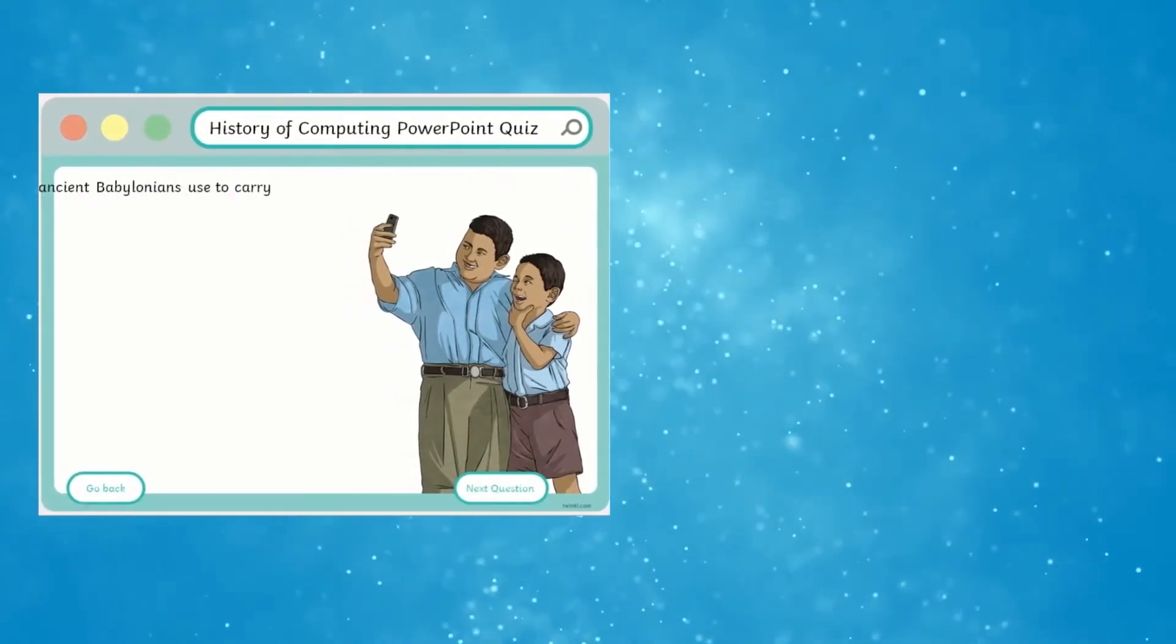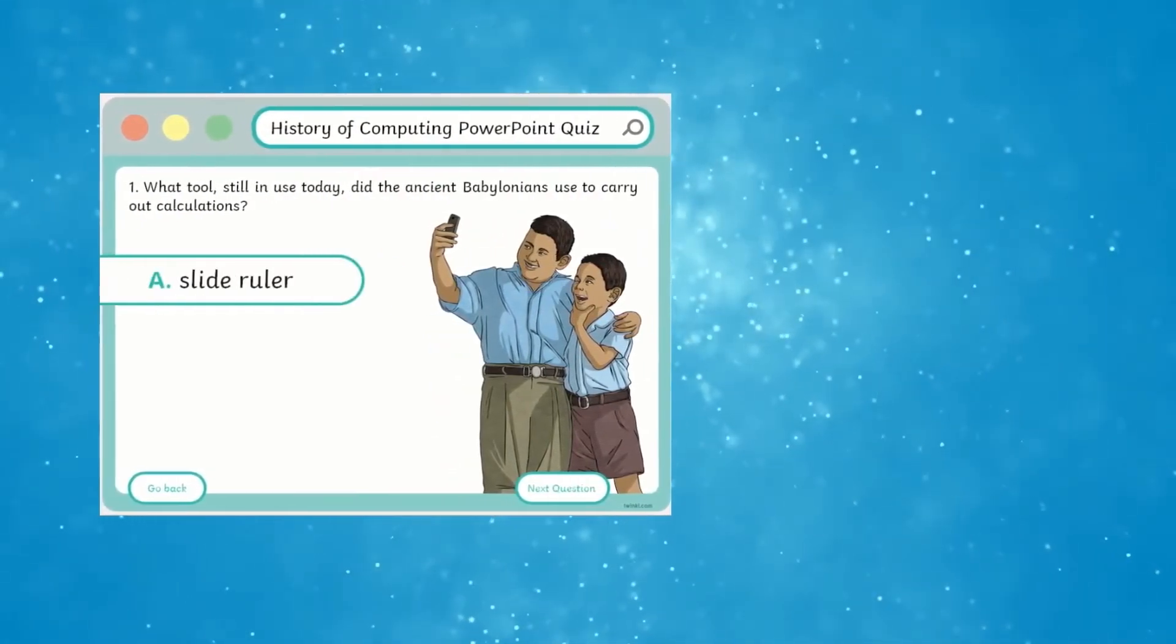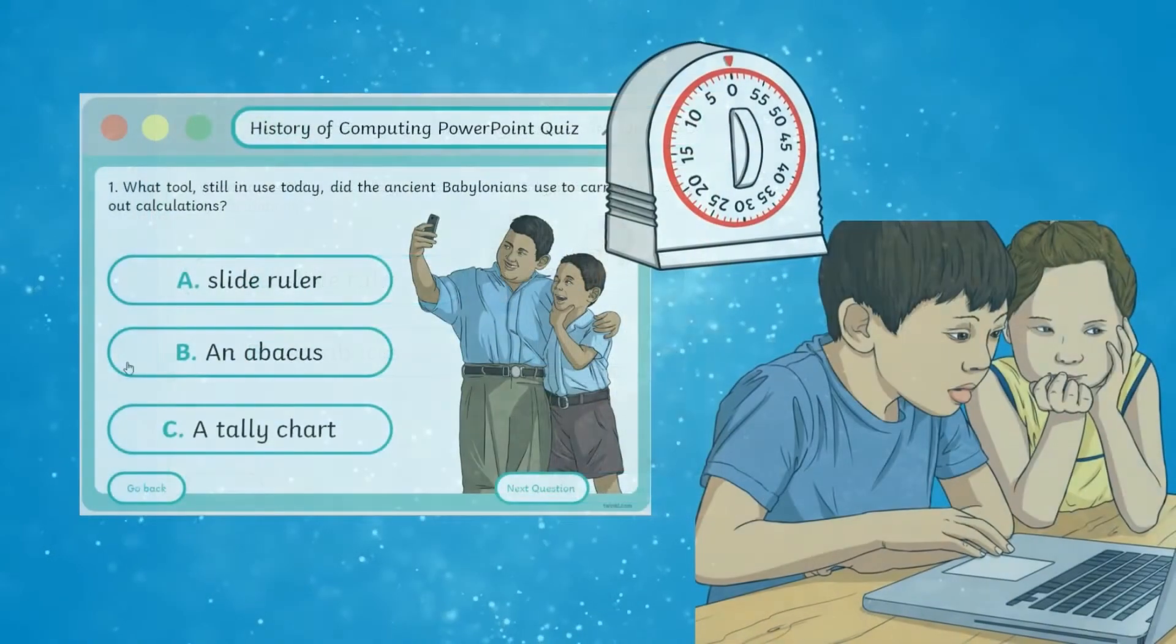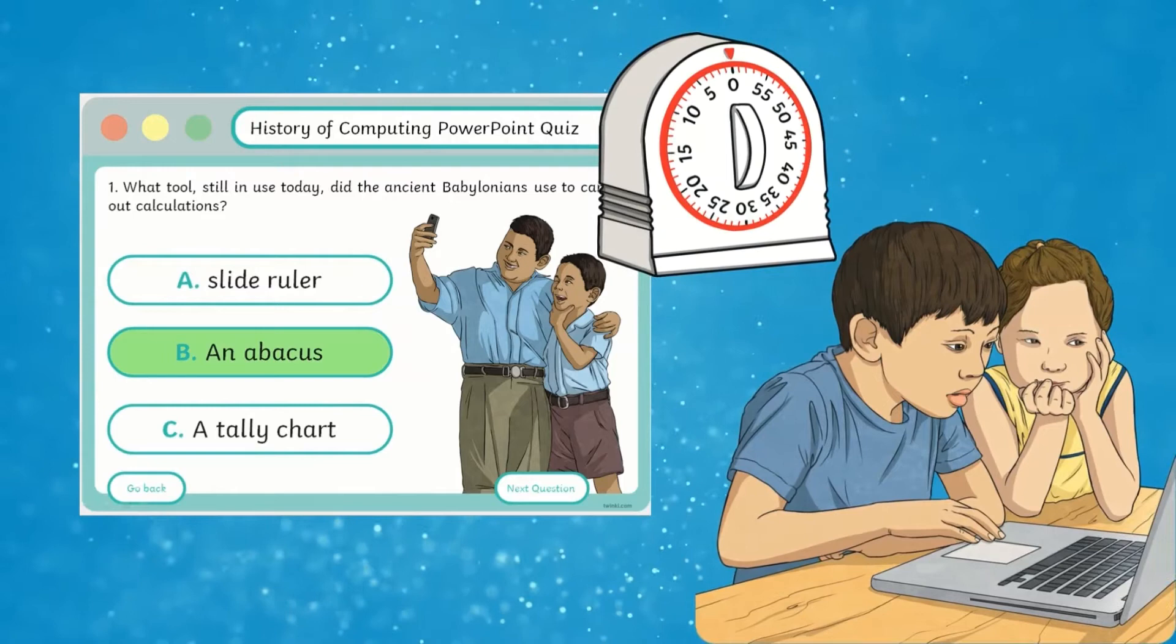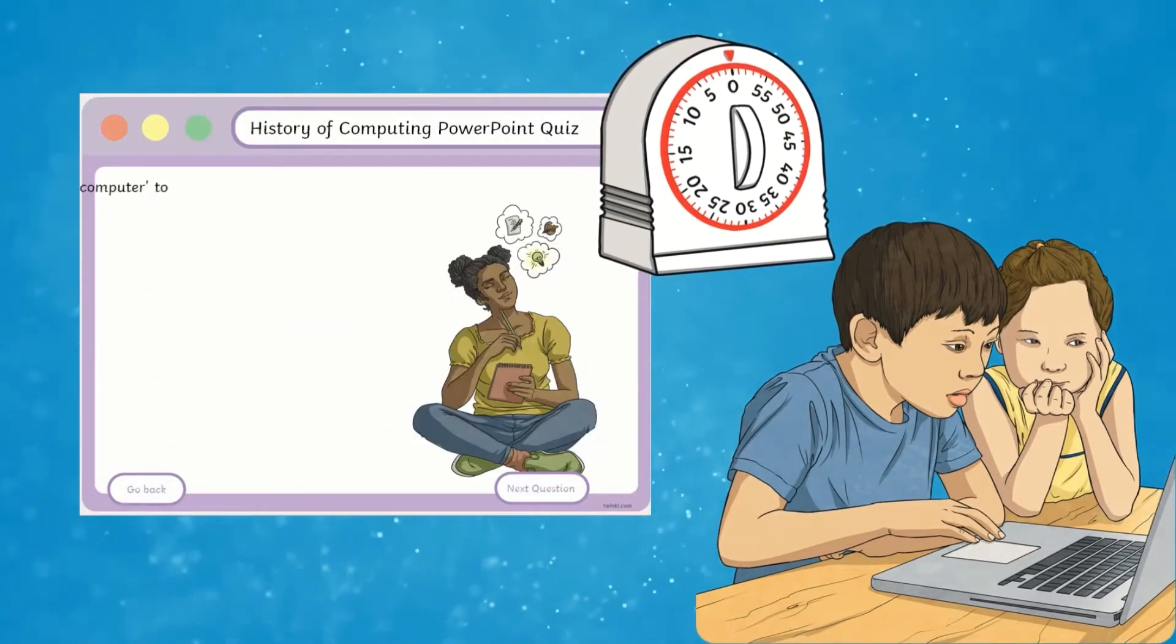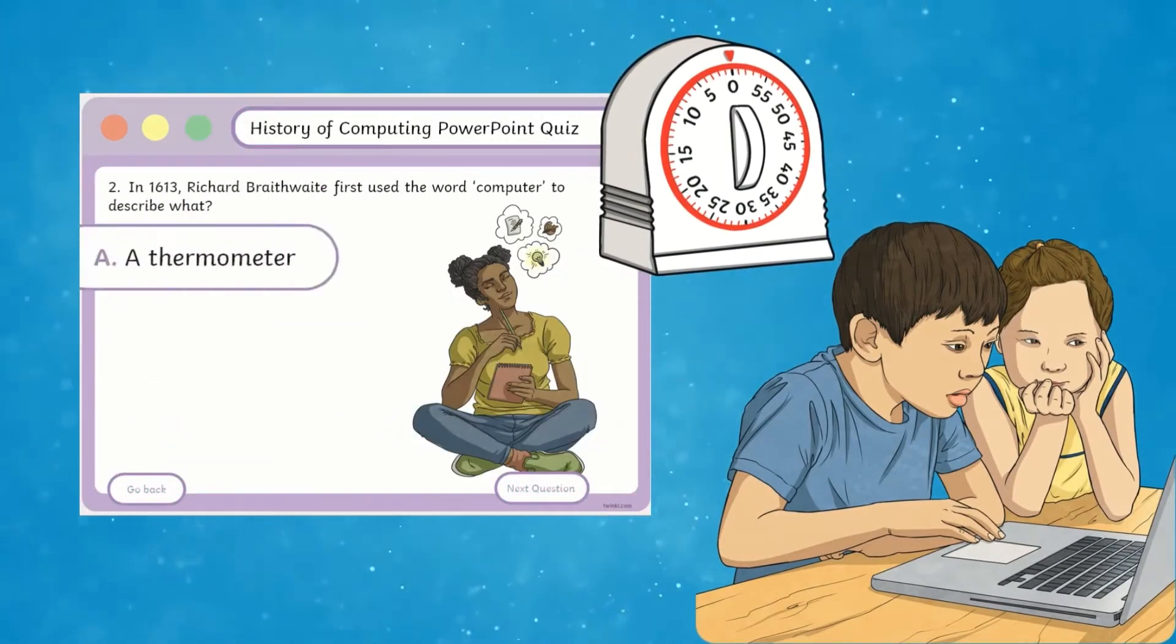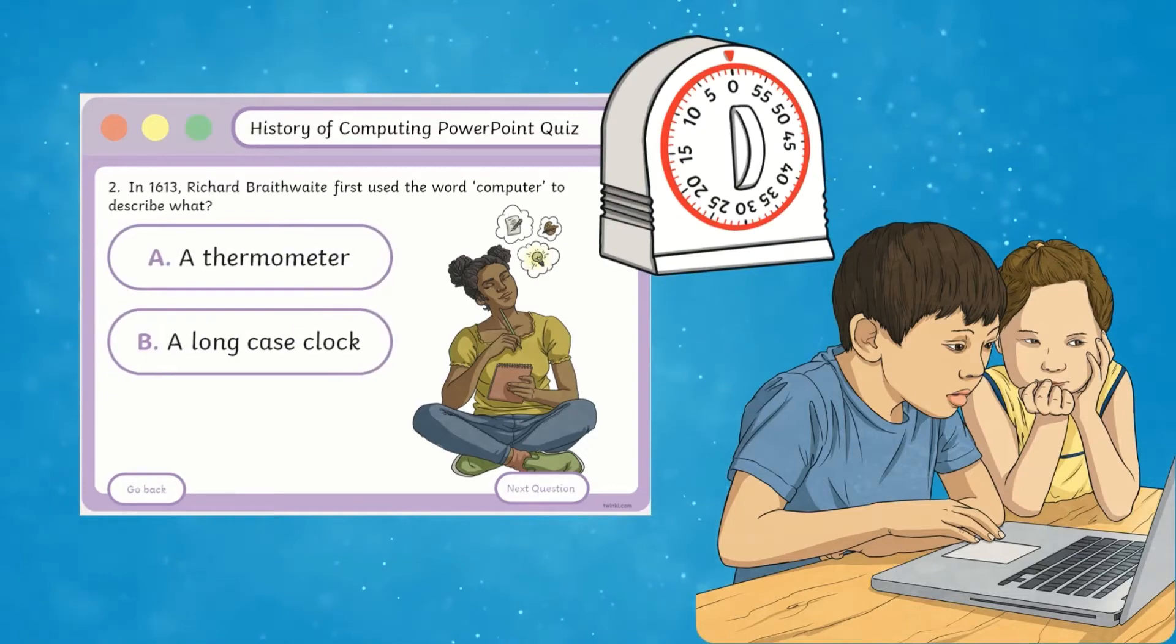Simply read through the questions as a class and give your children time to discuss and come up with an answer using the multiple choices. Once the timer is up, select the correct or most popular answer from the multiple options on display. This is a great task to test your children's knowledge but also to create a discussion surrounding the answers.